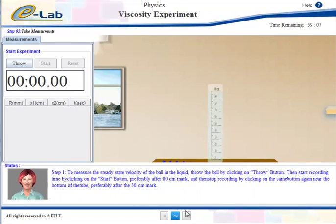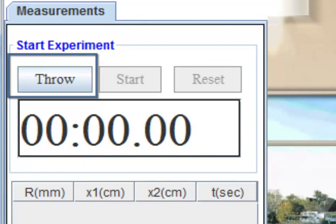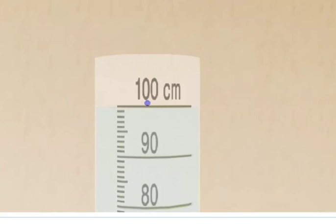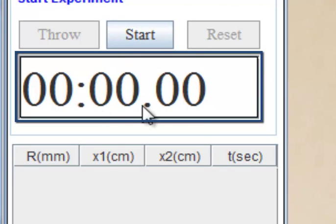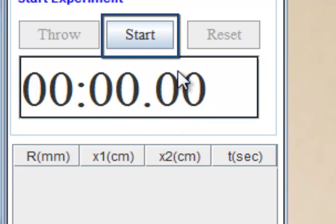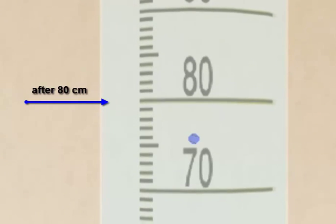For each ball, you will make three clicks. The first click on the throw button to throw the ball starting from the air. Here the time counter will not run. The second one on the start button to start the time counter and is taken near the top of the tube. Then the name of the button will change to stop.